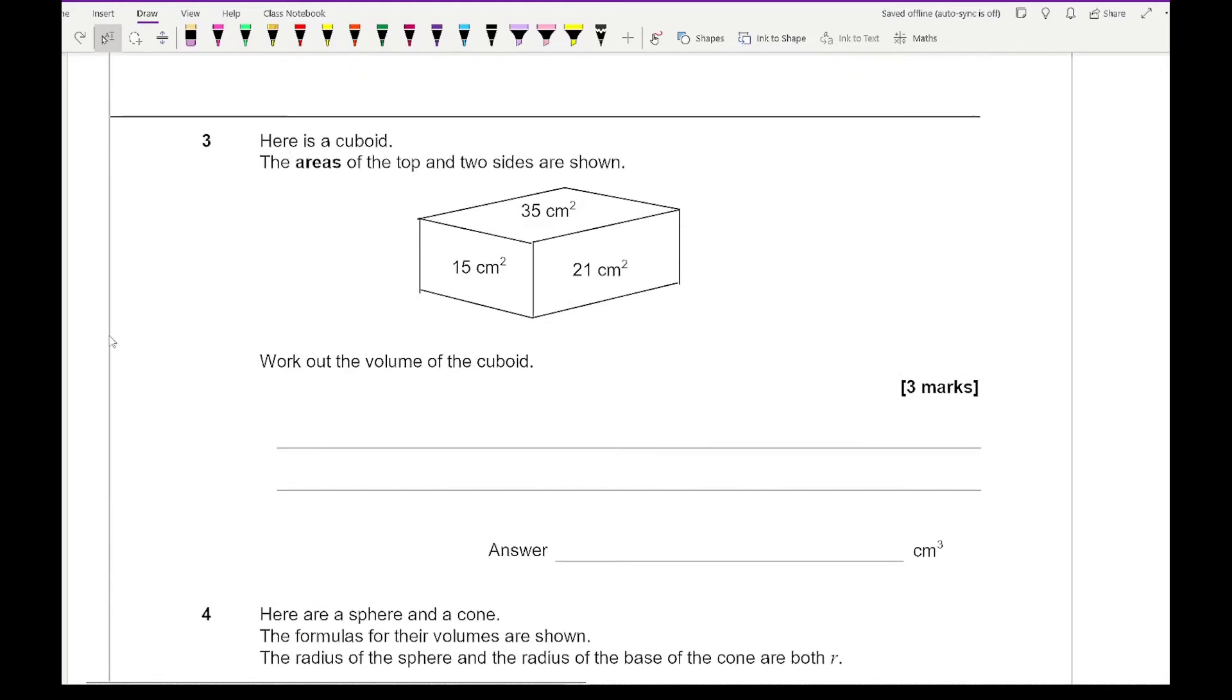For question 3, it says here is a cuboid. The areas of the top and the two sides are shown. Work out the volume of the cuboid. Now with this, what we need to do is find common factors between each of the sides. So here I need to find a common factor between 35 and 21, a common factor between 15 and 21, and a common factor between 35 and 15. So for this, well this is going to be 5, that's going to be 7, and that's going to be 3. So here the volume is going to be 5 times 7 times 3, which is going to be 21 times 5, which is 105.